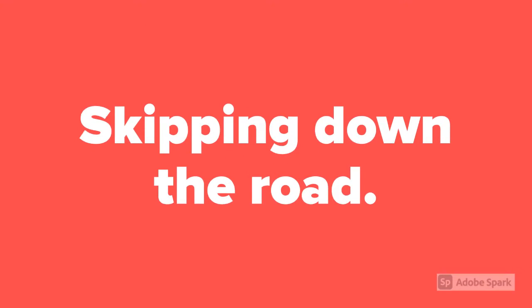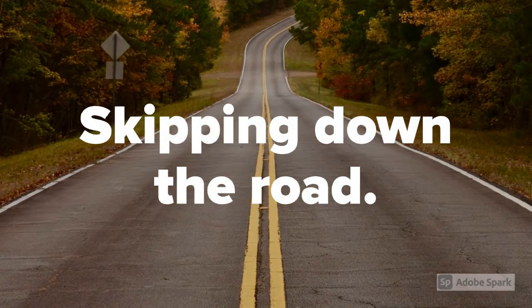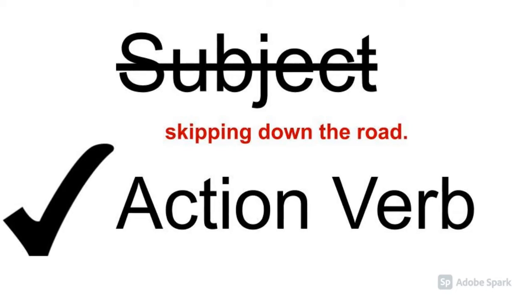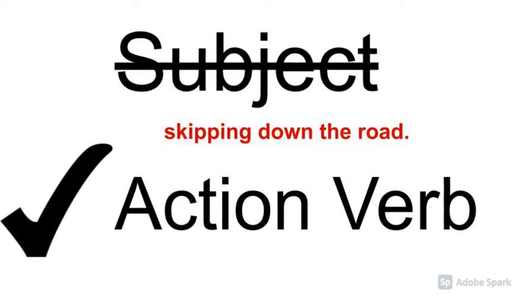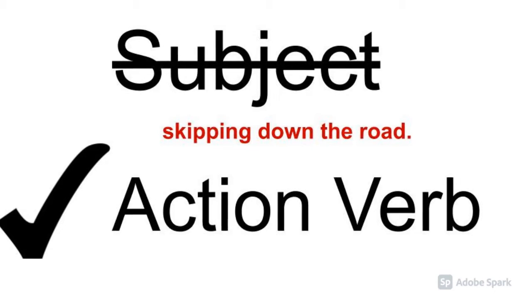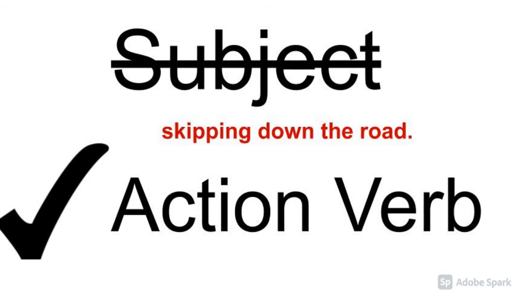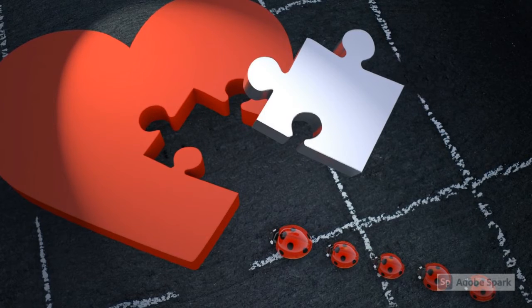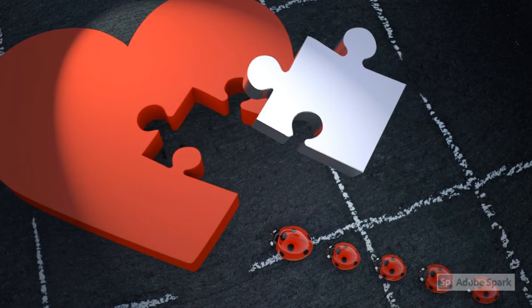Here's another tricky one. Is this a complete sentence or just a fragment? 'Skipping down the road.' We need to be careful. There is a noun here — road — but the noun is not the subject; it's after the verb. Is there a subject? No. Skipping is the action verb, but there's no subject. This is a fragment. Remember, if it's missing the subject or the verb, it is likely just a fragment.